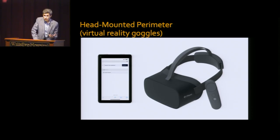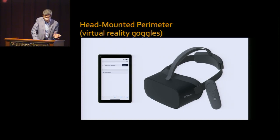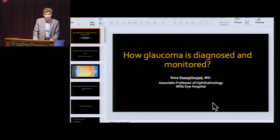At the moment, we use a large machine for visual field testing, but in the future patients may be able to check their own visual field using virtual reality goggles connected to a tablet or cell phone. It's much easier than the current visual field test, though they are not yet approved. In the future, patients may be able to use this technology at home.